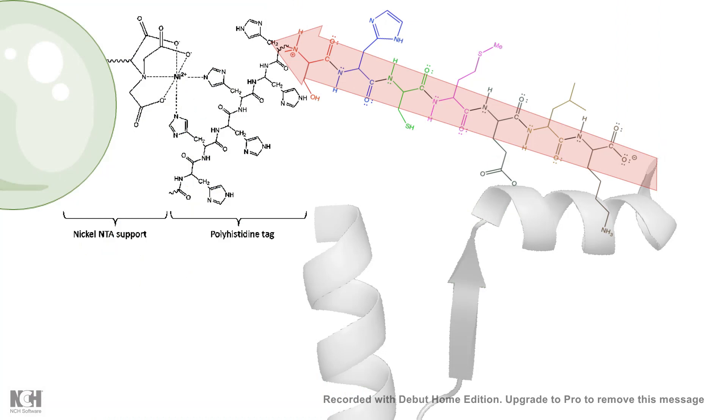One of the most popular types of tags that is used these days is known as his-tag protein purification. Here you synthesize your protein in such a way that it has an N-terminal histidine tag, a hexahistidine tag. Now histidine has a high affinity for nickel NTA matrix.